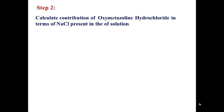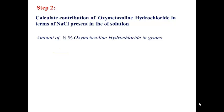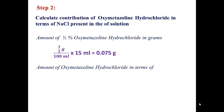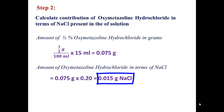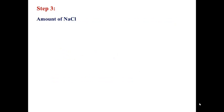Step 2: calculate the contribution of oxymetazoline hydrochloride in terms of NaCl. Convert from weight/volume percent: 0.5 divided by 100, times 15 mL, gives 0.075 grams. Then multiply by the E value of 0.2, giving 0.015 grams NaCl.